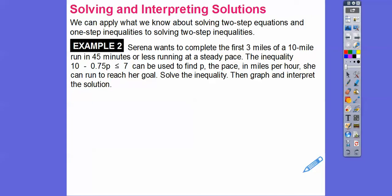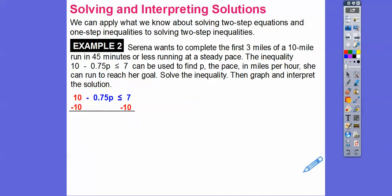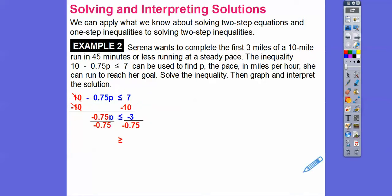Serena wants to complete the first three miles of a 10-mile run in 45 minutes or less, running at a steady pace. The inequality 10 minus 0.75p ≤ 7 is used to find p — the pace in miles per hour she can run to reach her goal. To solve: first subtract 10 from both sides — that won't flip the inequality. Then divide both sides by negative 0.75, and when we divide by a negative, it flips the inequality, giving us p ≥ 4.